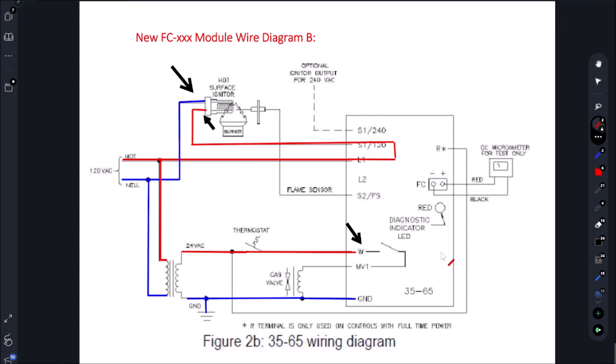This switch right here that's currently open will close. We will close the circuit and then we will send power to our gas valve, and that's going to send gas to our burner. Now we want to make sure we have ignition at our burner. How do we do that?